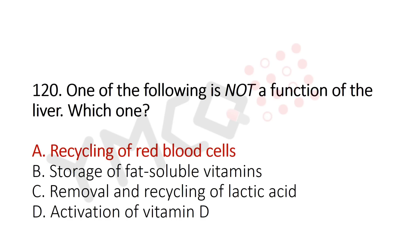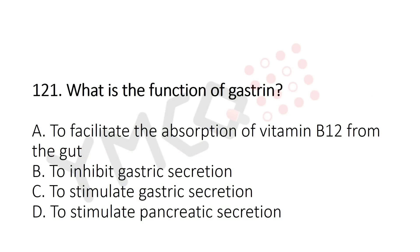Now Question 121: What is the function of gastrin? Option A: to facilitate the absorption of vitamin B12 from the gut, Option B: to inhibit gastric secretion, Option C: to stimulate gastric secretion, Option D: to stimulate pancreatic secretion. The answer is Option C: to stimulate gastric secretion.